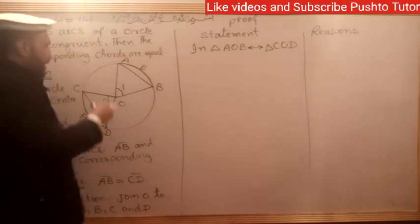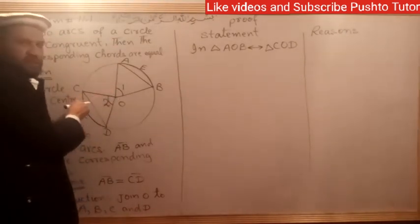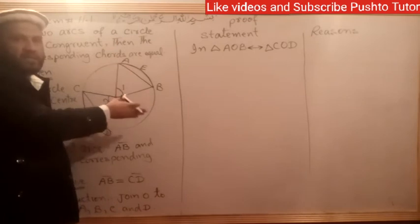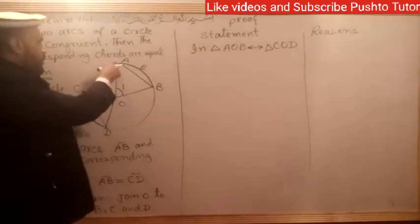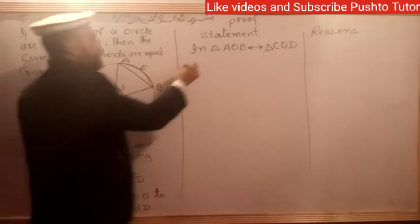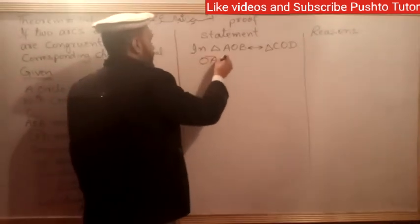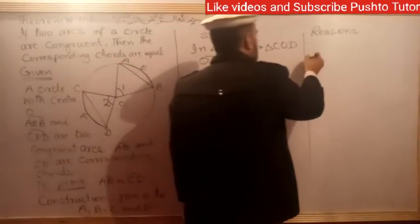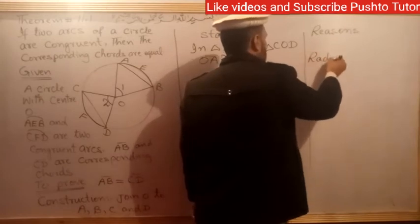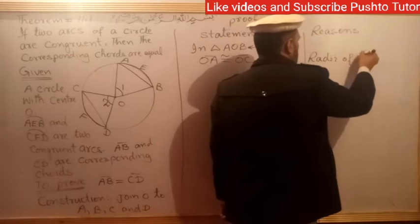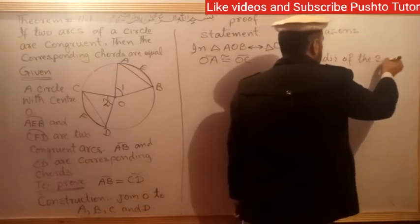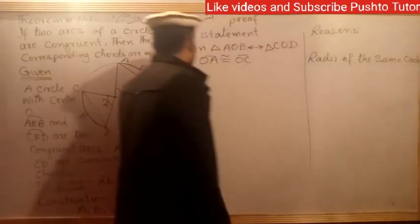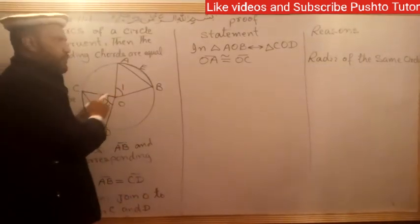OA is the radius, OC is the radius, OD is the radius — all radii of the same circle. The lengths are equal because they are radii of the same circle.